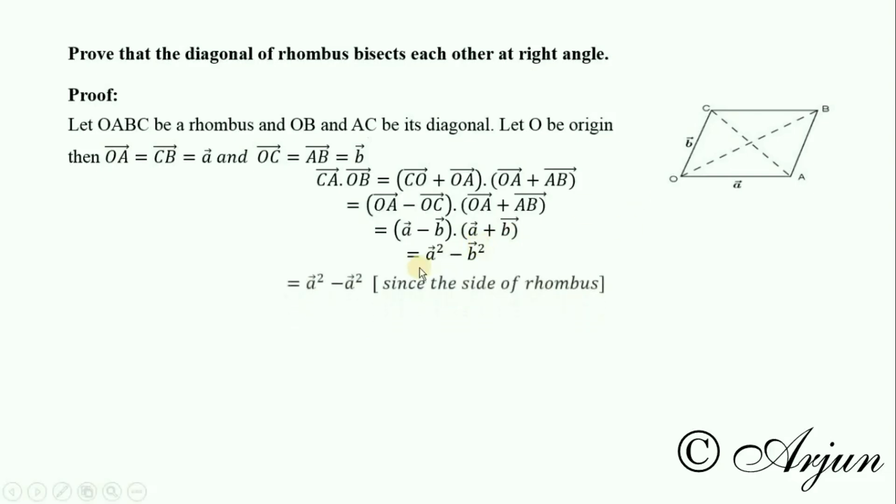Now this can be simplified. Vector b and vector a have the same magnitude—OA and OC are sides of the rhombus, so they are equal.